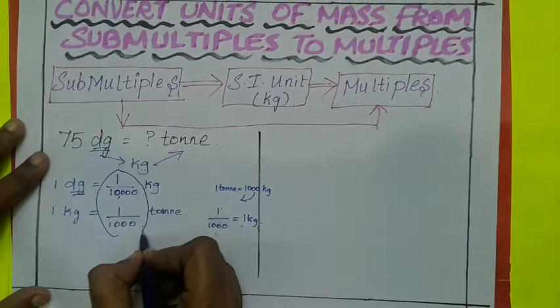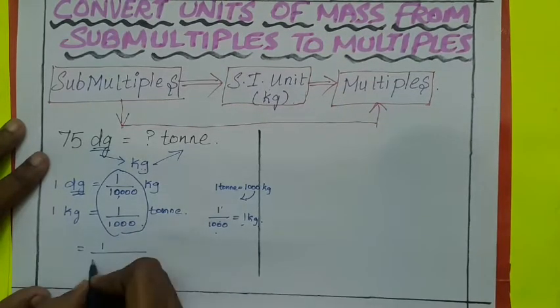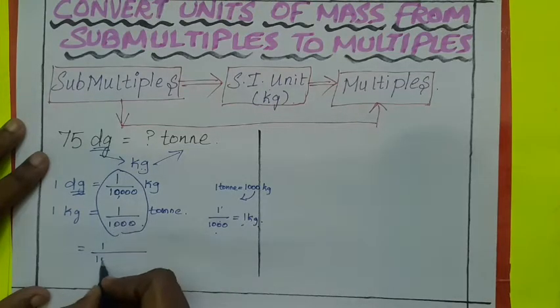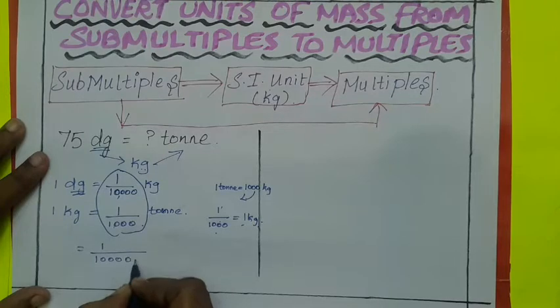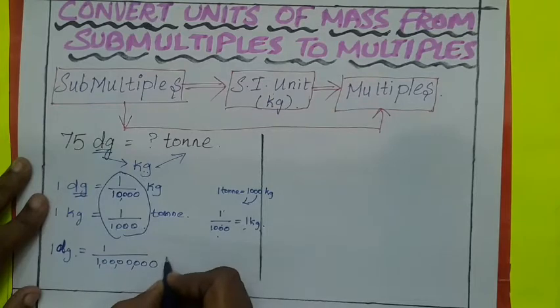Now multiply both the answers. You will get 1 crore. 1, 2, 3, 4, 5, 6, 7. 7 zeros are there. So 1 decigram is equal to 1 by 1 crore tons.